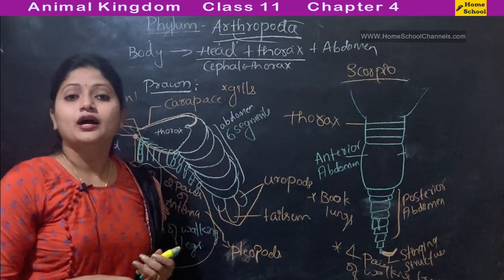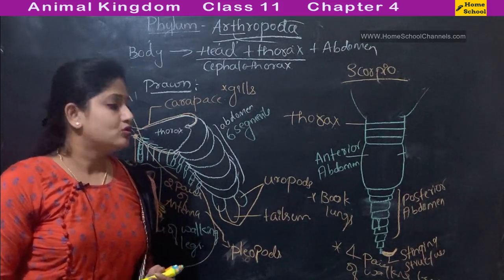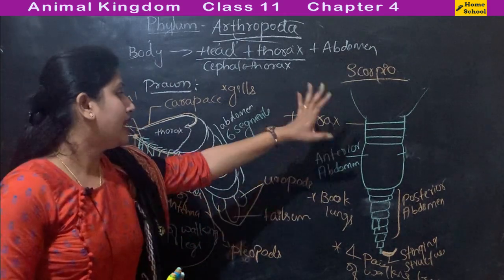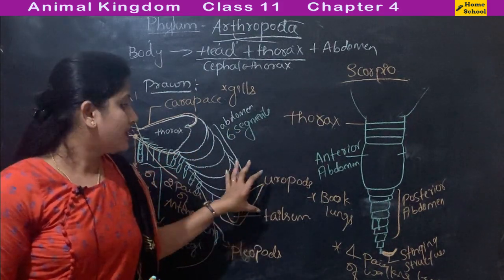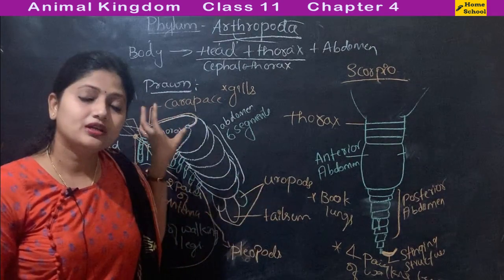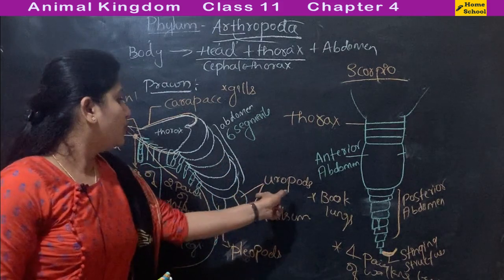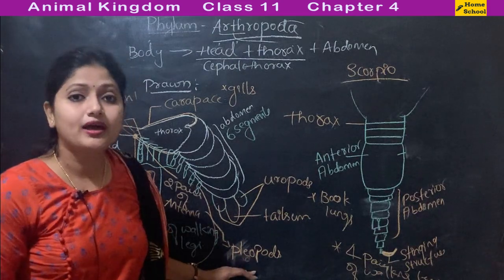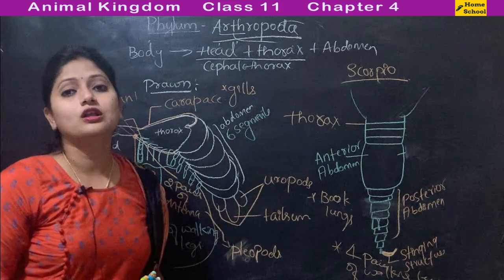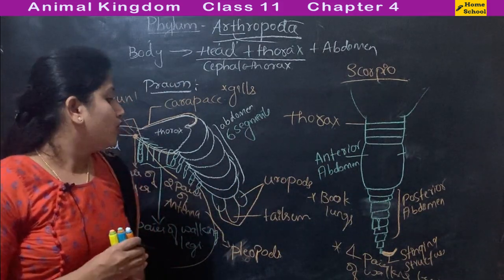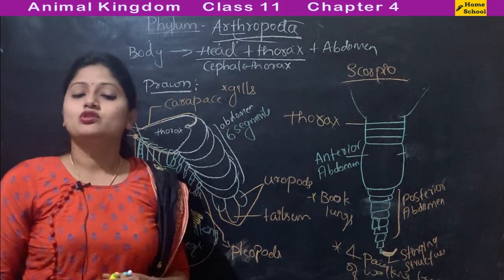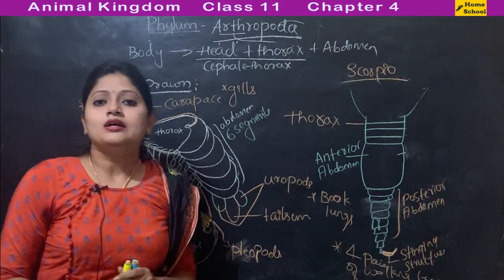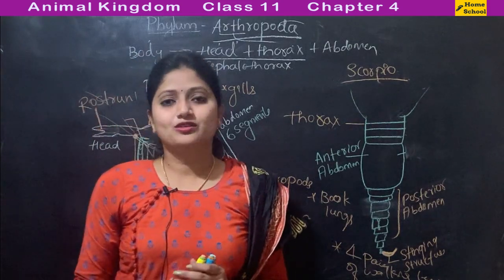This completes the phylums Annelida and Arthropoda. Remember the specific namings — like uropods and pleopods and which organism they belong to — as these can be asked in questions. In the next video, we will cover the remaining phylums.